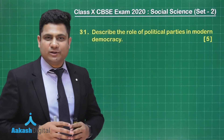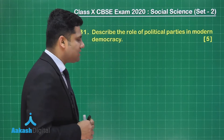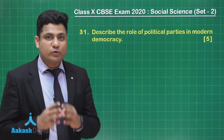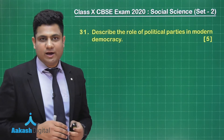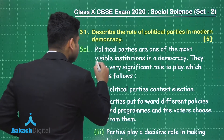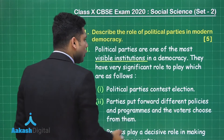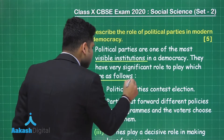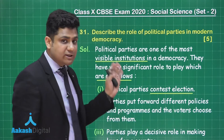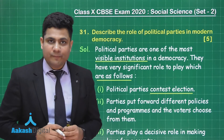Let's take question number 31. It says: describe the role of political parties in modern democracy. This question is directly from the chapter on political parties. Political parties are one of the most visible institutions in a democracy and have a very significant role to play. First role: the political parties contest elections. The very first role of a political party is to come together, contest elections, and form the government.